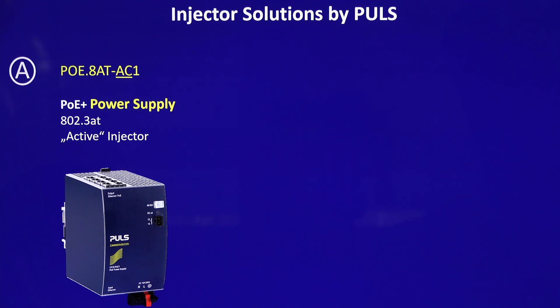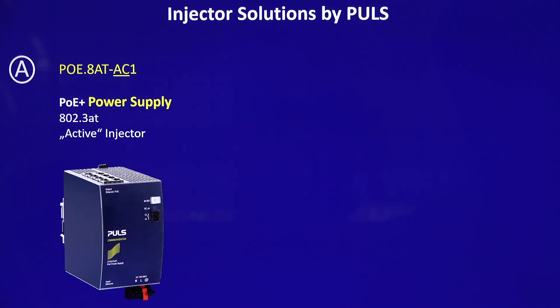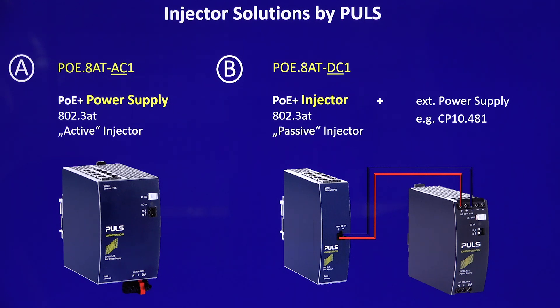How is Pulse addressing these two types of injecting power into an Ethernet line? We have two products. The first is a solid, robust, highly efficient, and reliable Pulse power supply with an eight-port injector integrated. This eight-port injector is compliant to the IEEE 802.3 AT standard and can be directly connected to 230 or 110 volts. In addition, we have a DC-only input injector which can be connected to an existing 48 or 55-volt DC grid, with the same compliance to the IEEE 802.3 AT standard.